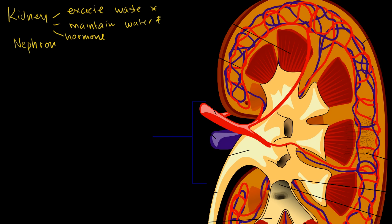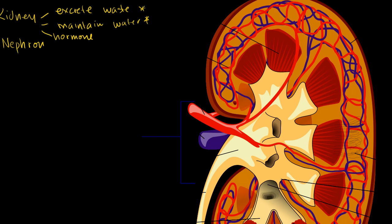Most of us have two of these kidneys, and they're kind of closer to our back on either side of our spine, behind our liver. This is a zoomed-in version of a kidney — it isn't as big as it appears in full screen. We've sliced it so we can see what's going on inside. Just to understand the different parts, because it will be significant when we talk about the functional units or the nephron: this area right here is called the renal cortex.